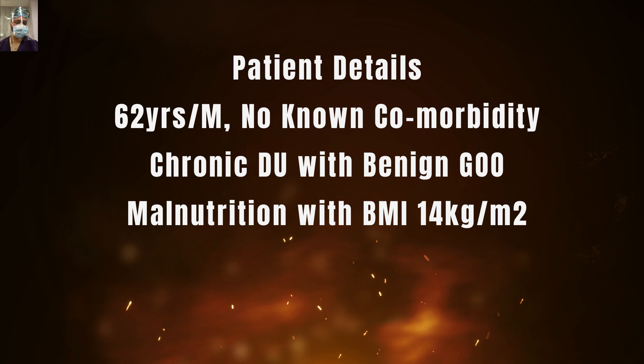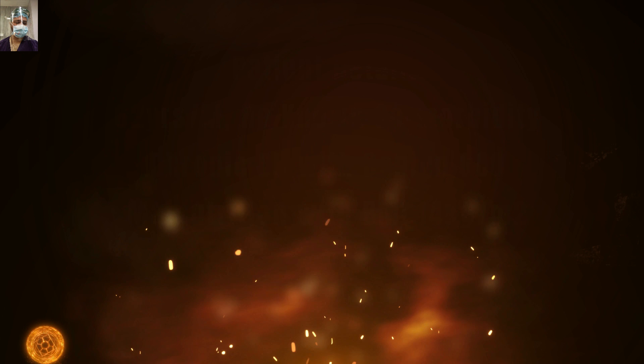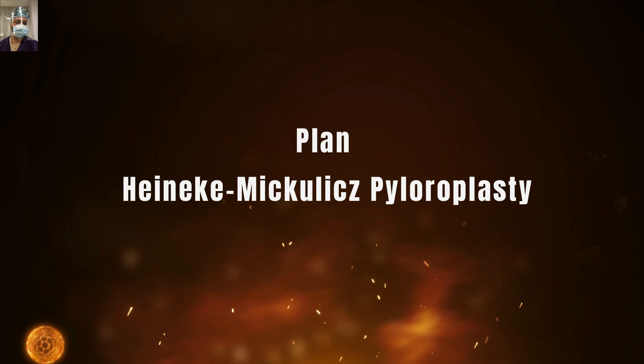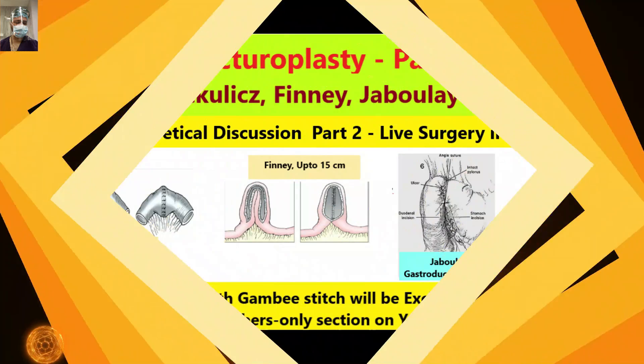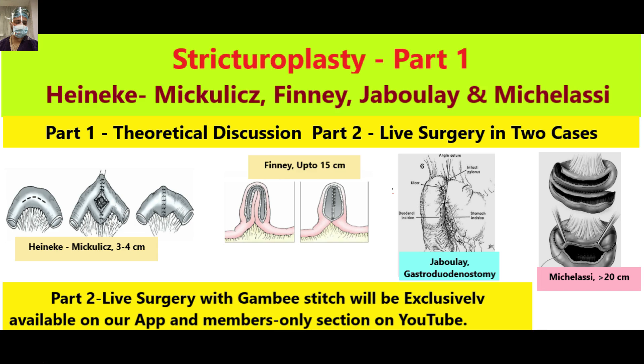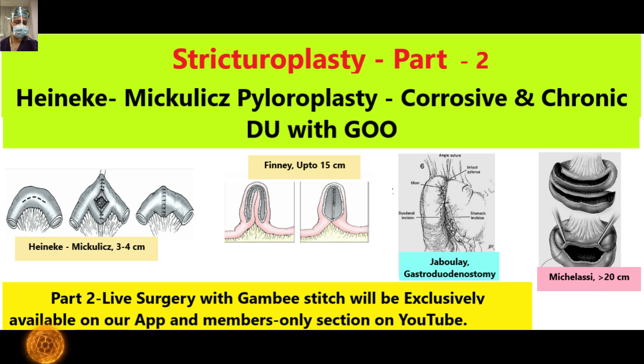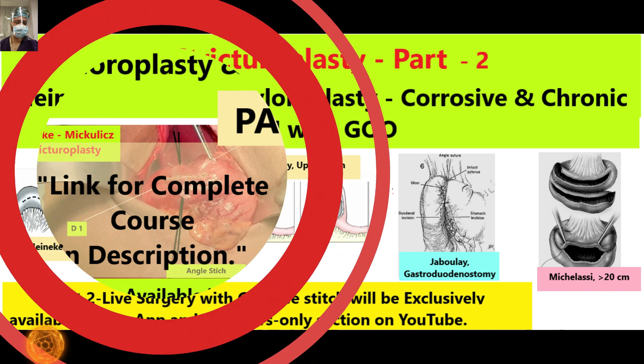The first case is a 62-year-old male with no known comorbidity. He has a history of chronic duodenal ulcer with benign gastric outlet obstruction. The patient was having recurrent vomiting and malnutrition with a BMI of 14 kg/m². He was planned for a Heineke-Mikulicz pyloroplasty. We have covered this same patient in detail — the Heineke-Mikulicz pyloroplasty, the stricturoplasty, and the Gambee stitch — with practical and theoretical discussion.